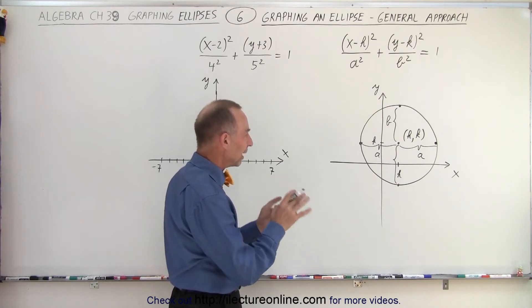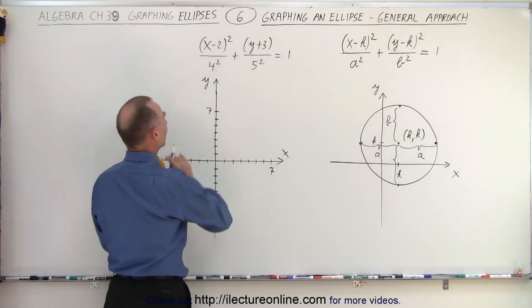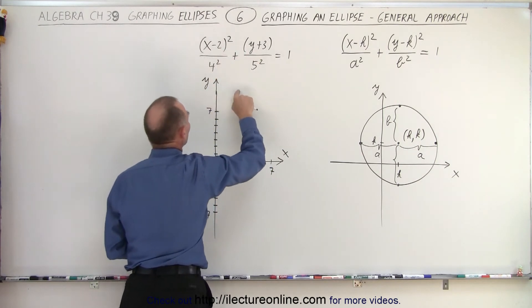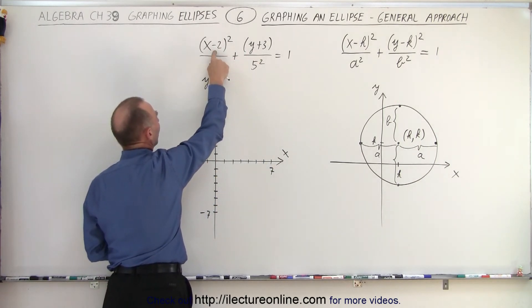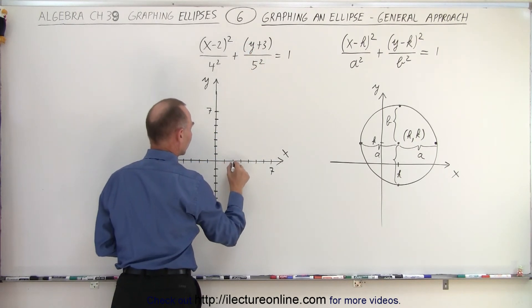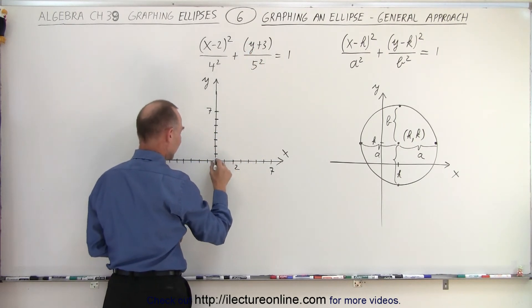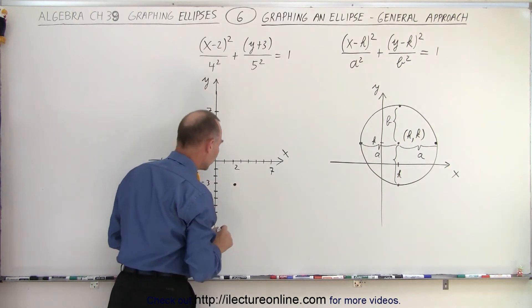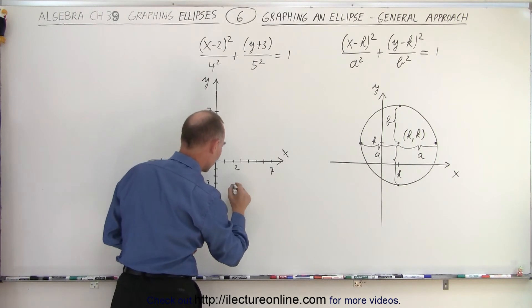So now we're going to apply that to a real problem. So here we have an actual set of numbers. So you see that we are going to be shifted to the right by two and down by three. So to the right by two, so this point right here is two, and down by three, this point is negative three. So this will be the central point of the ellipse.